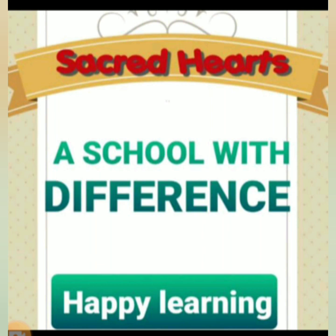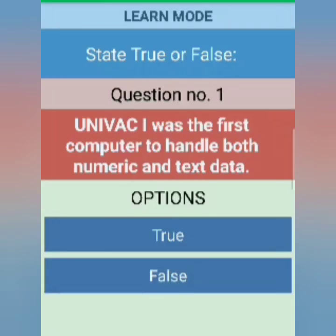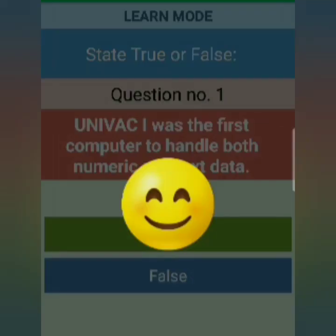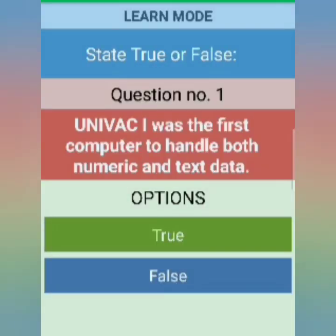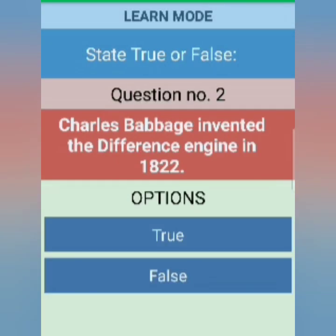Let's start the true/false. The first statement is: UNIVAC was the first computer to handle both numeric and text data. Yesterday I told you this — UNIVAC was the first computer to handle both kinds of data, so this is TRUE.